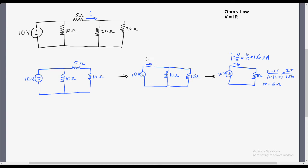We can label 1.67 amps coming out of the voltage source in the same direction that we drew on the far right circuit. And now we know that 1.67 amps is going to be split between the 10-ohm resistor and the 15-ohm resistor.